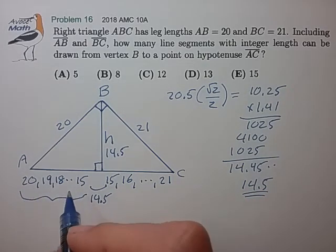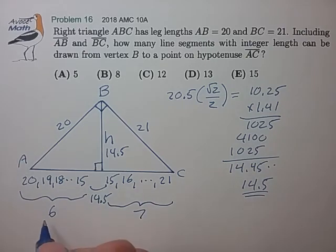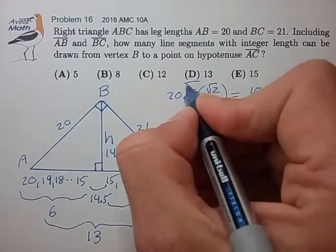This is 20 minus 15 plus 1 is 6 line segments. This is 7 line segments. All totaled is 13 line segments for choice D.